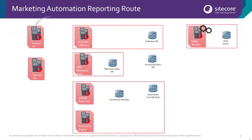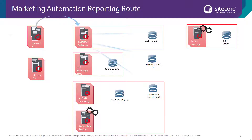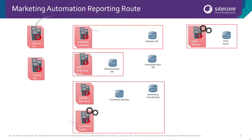Imagine you make a phone call to a call center and then your record is updated on the CRM, which immediately pushes an interaction into XConnect and you want to respond to that with an automation plan. You cannot do that in the old system, but now you can.